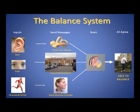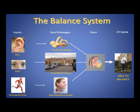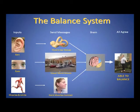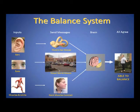To help you balance, you use messages from your ears, eyes and muscles and joints. If you moved your head to look over your left shoulder, the fluid in your ears would move, which would subsequently move the hair cells and send messages to your brain that you have turned your head to the left. Your eyes would also be telling your brain that your visual world has moved, and the muscles in your neck would contract and again tell your brain that your head has turned to the left.